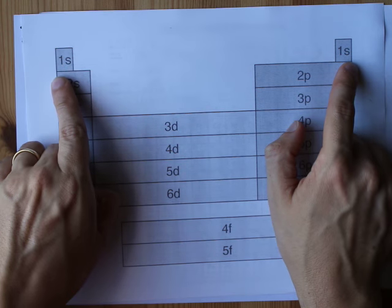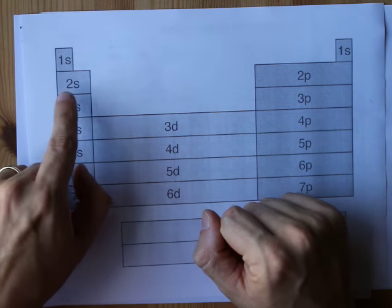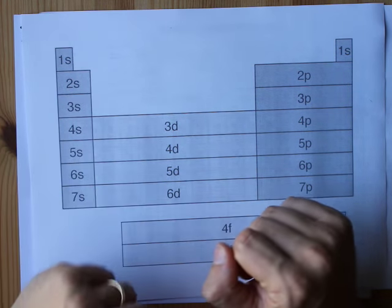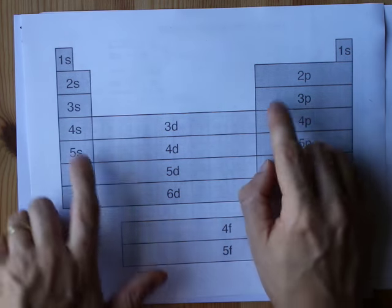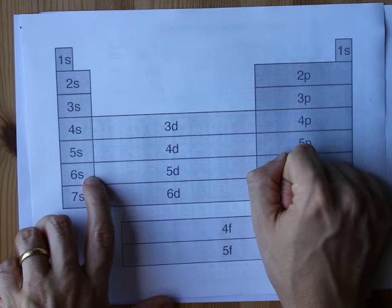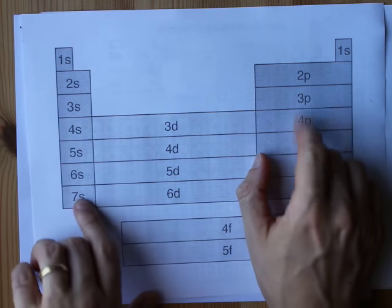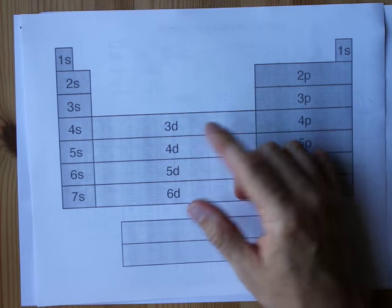You'll notice 1s comes first. You can fit two electrons inside of an s subshell. Then 2s, then 2p. You can fit six inside of a p. Then 3s, 3p, 4s, back to 3d.